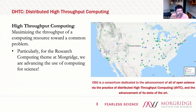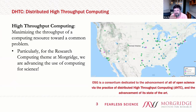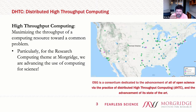A couple of basics first. I think of high-throughput computing as maximizing the throughput of computing resources toward a common problem. For us here at Morgridge, and for everybody on this call, we're trying to use computing in different ways for the advancement of science. We have individual scientists all the way up to very large collaborations that are trying to leverage different computing resources to do simulations, analyze data, synthesize data, filter — whatever it might be. We're all looking at this through the lens of open science.